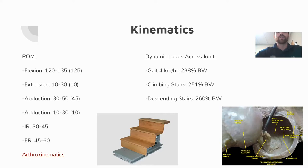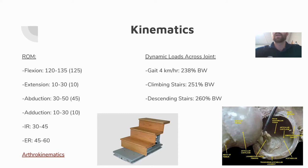Dynamic loads across the hip joint are much greater than just standard body weight. On a single limb, body weight force is almost doubled, and muscle activity increases this further. Walking creates 238% body weight force through the femur; climbing stairs increases it to 251%; descending stairs is even greater due to the increased eccentric forces involved.